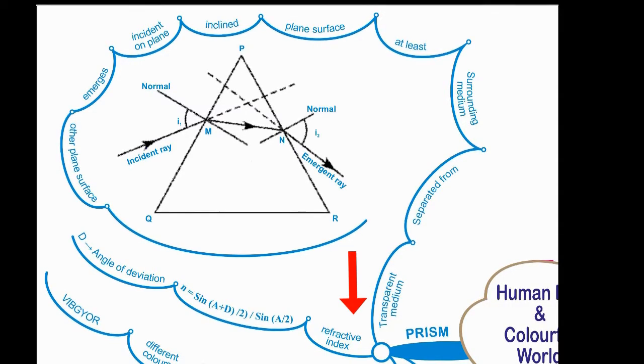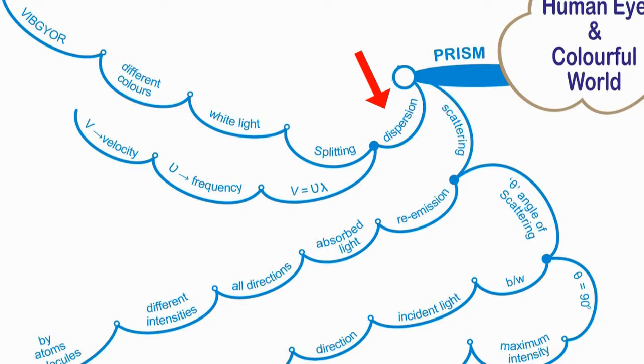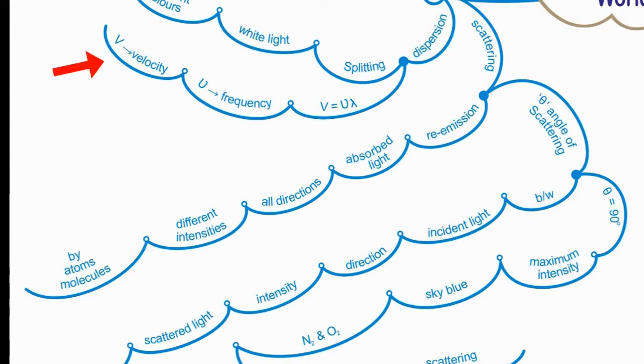The angle of deviation, dispersion, splitting white light into different colors. With GR, capital V is equal to frequency into lambda. Scattering is reemission of absorbed light in all directions with different intensities by atoms or molecules.